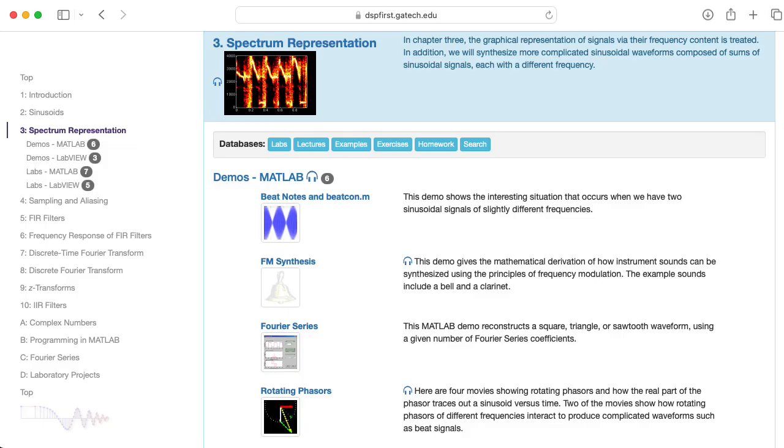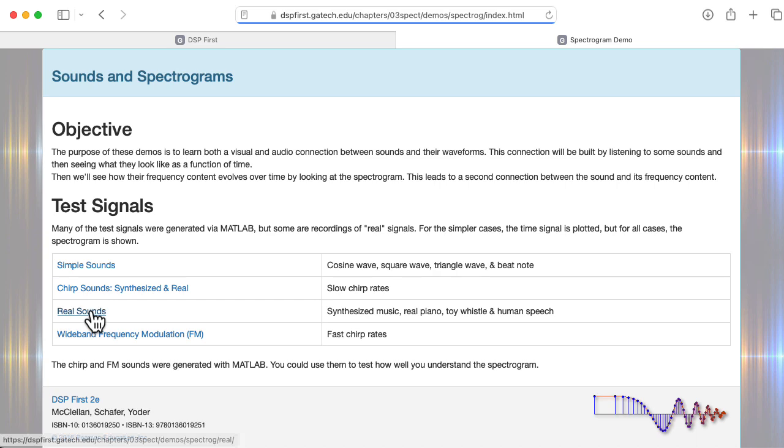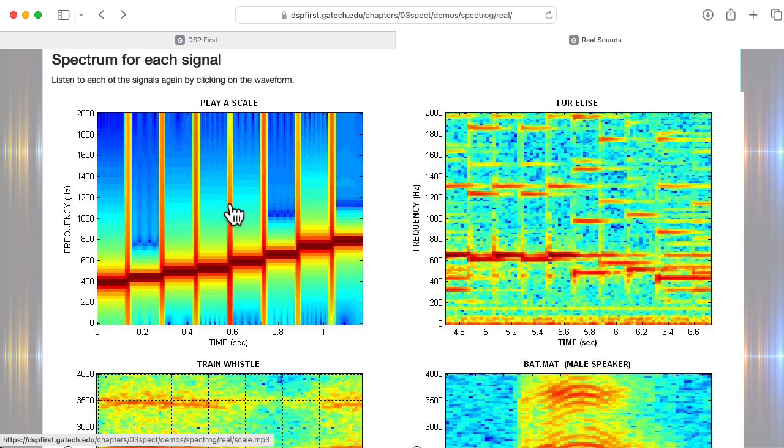There's some example spectrograms on the DSP First website. Let's check out the real sounds. Okay, so we've already heard that C scale.